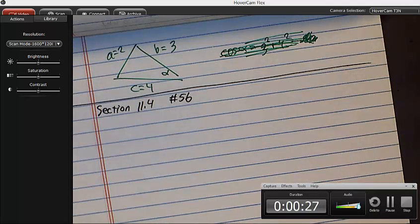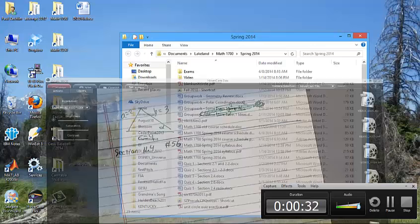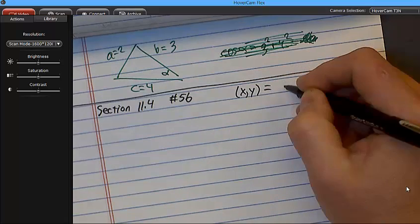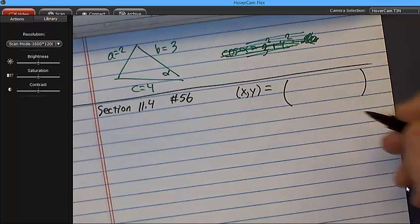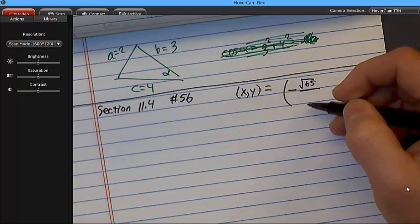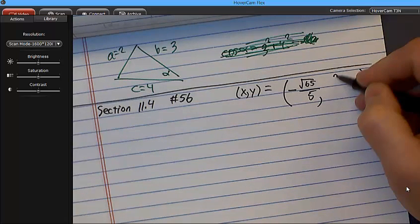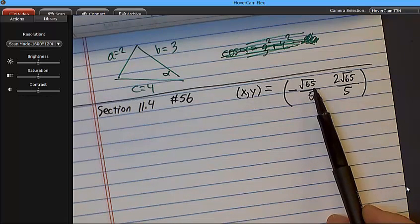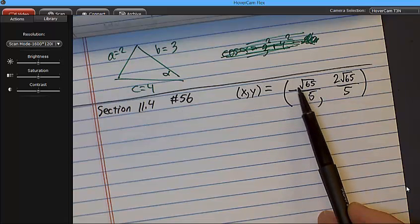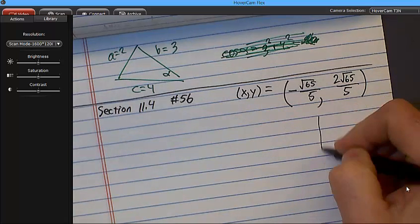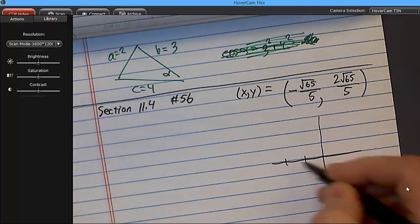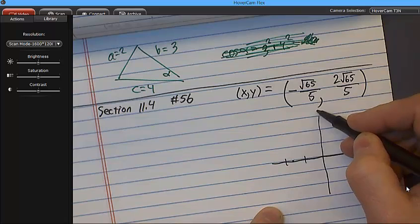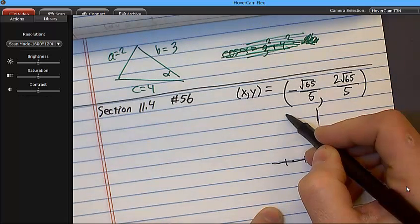And so they tell me the rectangular coordinates. They tell me that (x, y) is, and these are really ugly, negative square root of 65 over 5 and positive 2 square root of 65 over 5. I don't know what the square root of 65 is, although I know it's a little more than 8 because square root of 64 is 8. So it's like negative 8 fifths. Let me draw a picture of where (x, y) is. Well, here's negative 1, here's negative 2. So negative 8 fifths would be about there. And then here's positive 1, positive 2. This thing is twice as high, so it's going to be up here somewhere. That's the point (x, y).